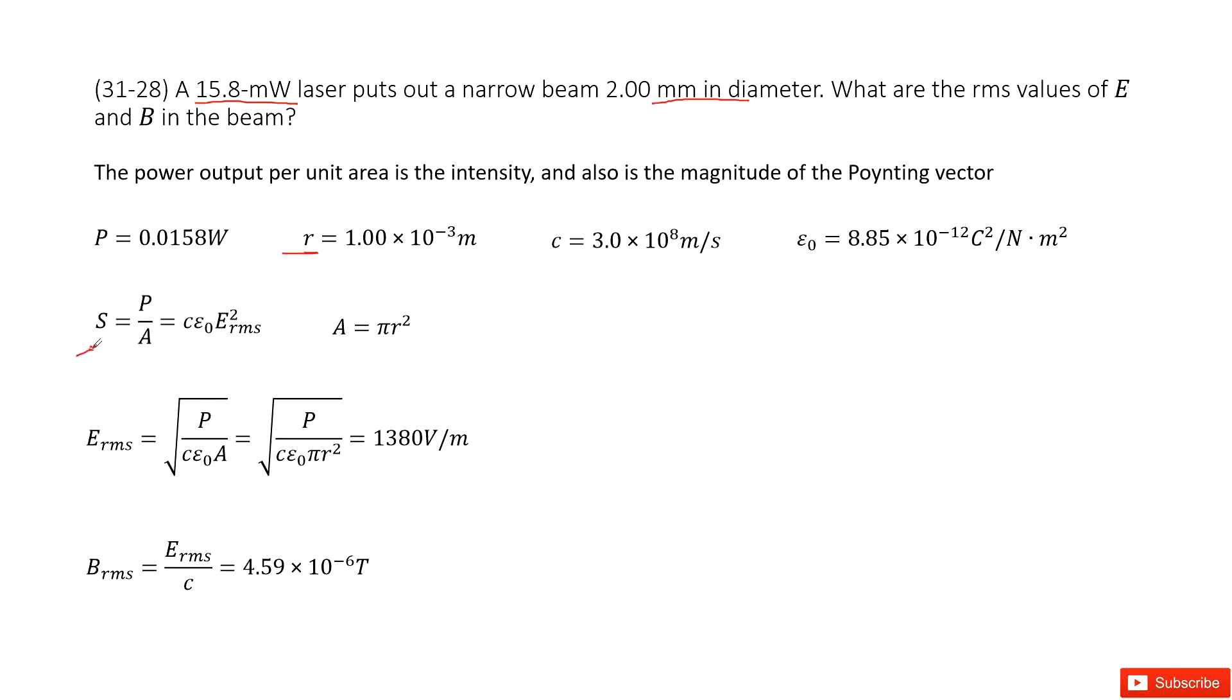Now this is the Poynting vector also connected with the root mean squared electric field. C epsilon and E rms squared. And now in this equation the A can be written as pi r squared.